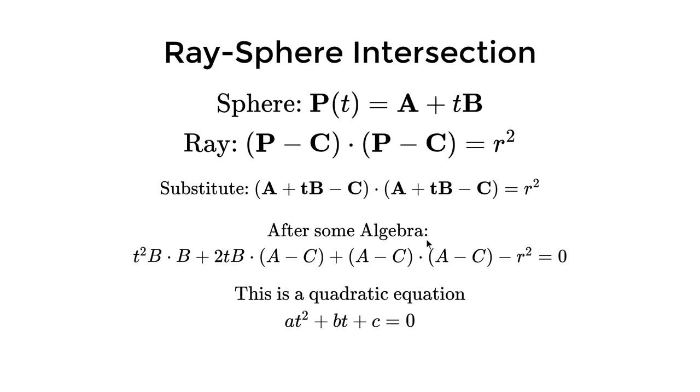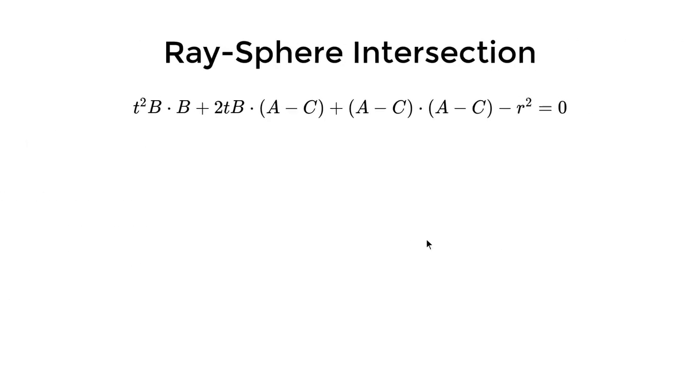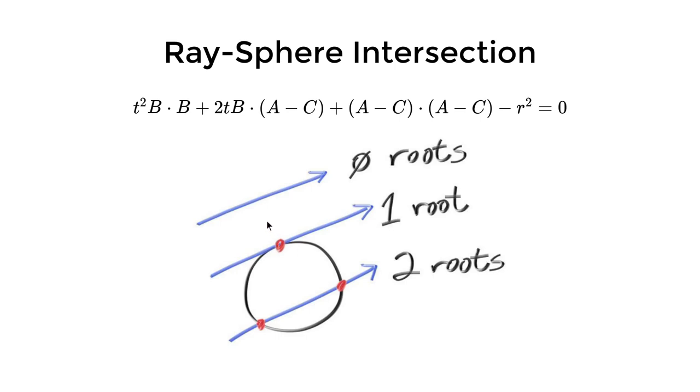Now we have a quadratic equation. The natural next step is to try to find its roots. We will rely on high school algebra of calculating the discriminant to find the root. If we don't have any root, then we know this ray doesn't intersect with this sphere.